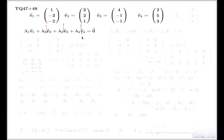You can think of λ1, λ2, λ3, λ4 as unknowns. If you think of it this way, the whole identity becomes a system of linear equations — three equations with four unknowns.